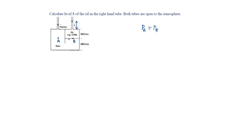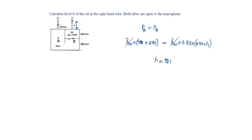At A, the liquid is water, so gamma_W into 110 plus the height 240 till A will be equal to gamma_W into the oil — specific gravity is 0.83 — into the height 240 plus H. Then H will be equal to 421.687 minus 240, which equals 181.686 mm, or 0.1816 meters.